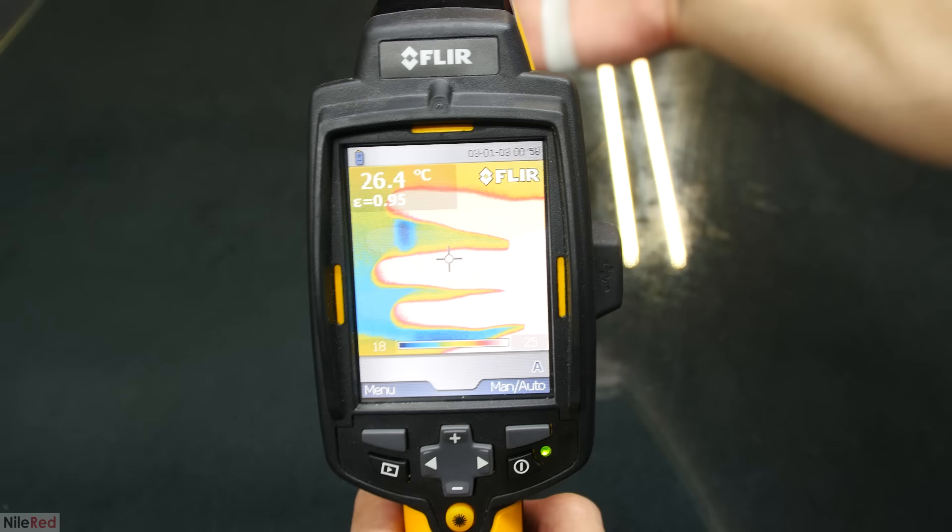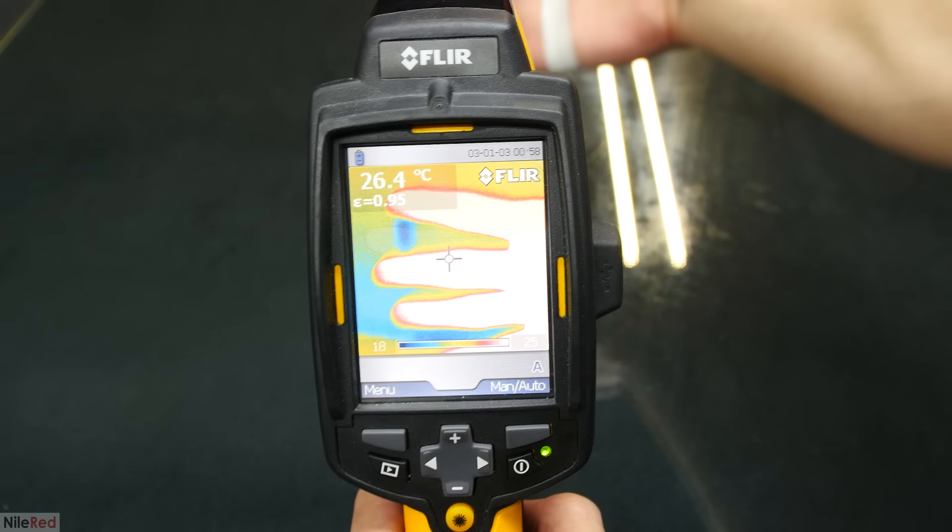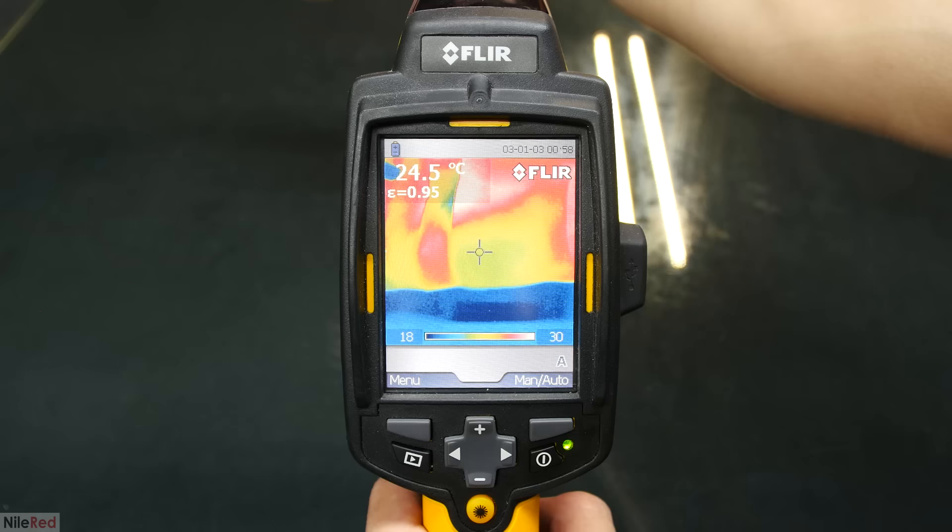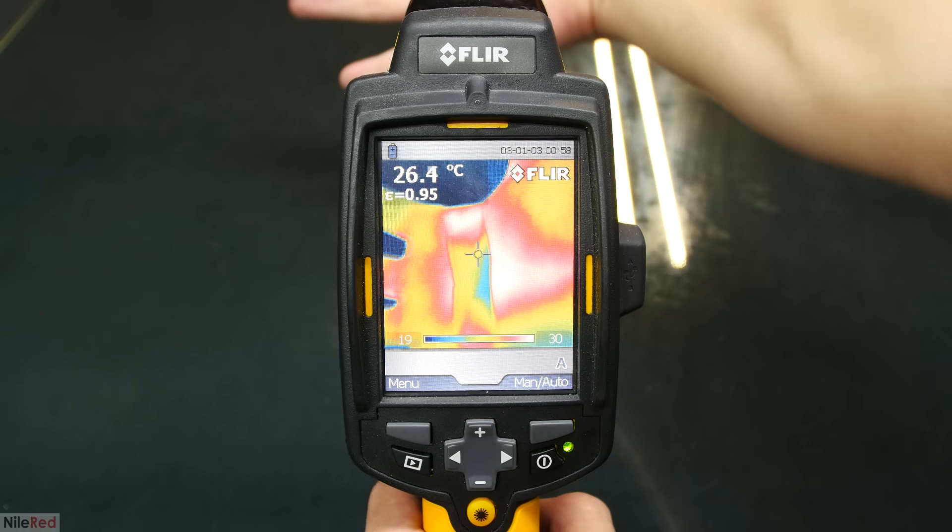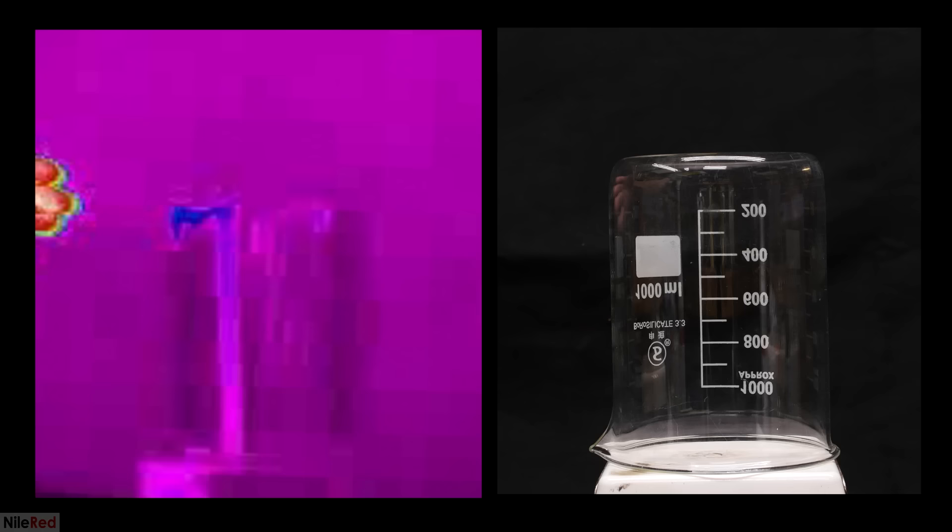The other color palette that I'm going to be using in this video is the rainbow one. With the rainbow color palette, it's a lot easier to visualize small temperature differences. The color palette that we choose to use really depends on what we're trying to do, and in this video, I'm going to be using both.